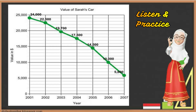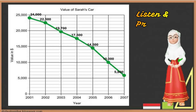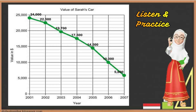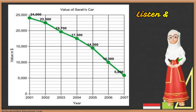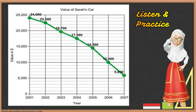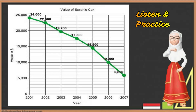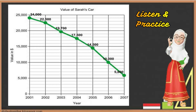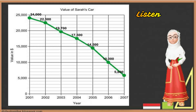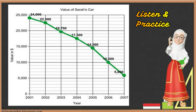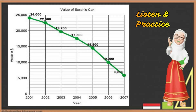What I am going to show is my car's value from the year 2001 to 2007. Let me show you the graph here, which illustrates my car's value in dollars. The horizontal scale shows the range of years and the vertical scale describes the range of the car's value in dollars.